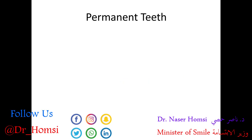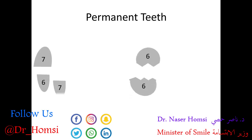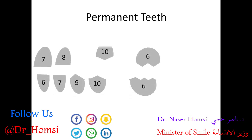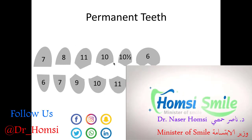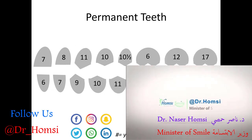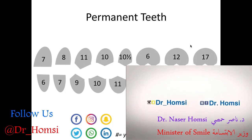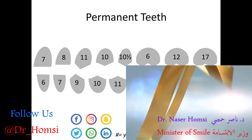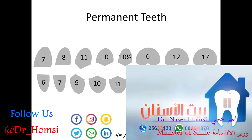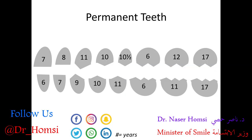All the eruption times for the permanent teeth are again straight from the ADA website. This time, all the numbers are in years, not months. These teeth also tend to erupt within a six-month window, but again learn a single number for each tooth for the board exam and focus most importantly on the sequence of eruption. How we remember this sequence is the word 'MAINE' — all uppercase — and by drawing those four letters separately we can remember the sequence of eruption for the permanent teeth.